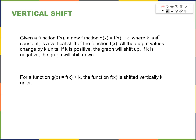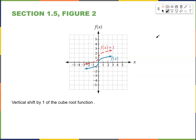If k is negative, the graph will shift down. For example, the given function f of x is the blue one, and the new function f of x plus one is a vertical shift by one of the cube root function.